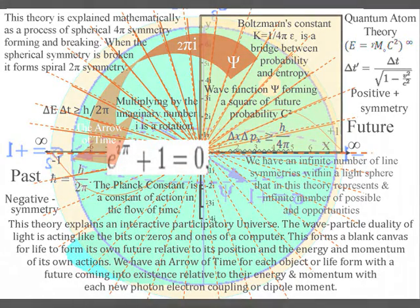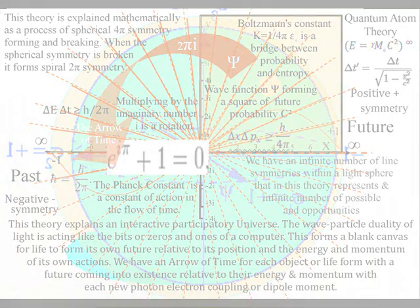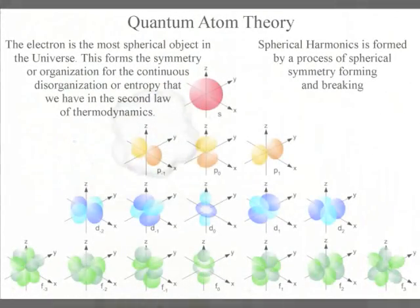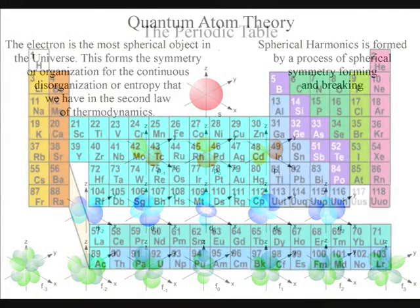At the most fundamental level this process can be explained as a process of spherical symmetry forming and breaking relative to the atoms of the periodic table.